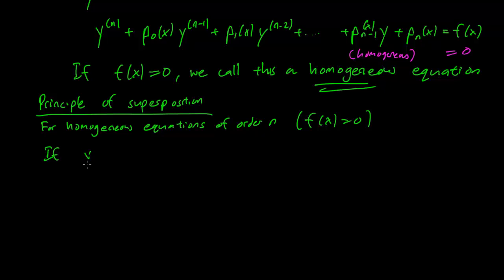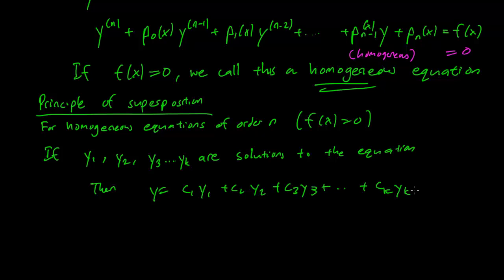If y1, y2, y3, and so on are solutions to the equation, then y equals c1 y1 plus c2 y2 plus c3 y3 plus, until c_k y_k is also a solution. This works more or less the same way as it did in the previous chapter.